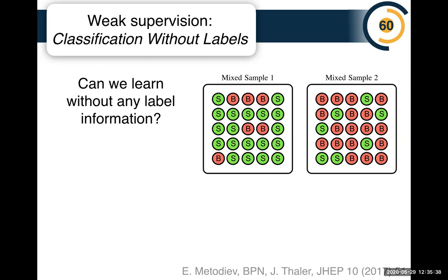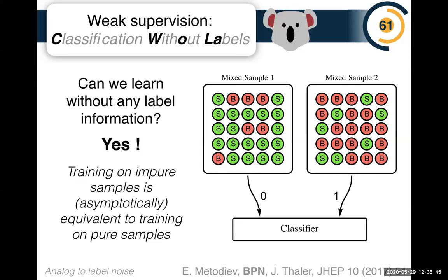One such technique is called Classification Without Labels, which we call CWoLa. The idea is simple: label everything in mixed sample one as zero and everything in mixed sample two as one, then use your favorite supervised classifier to distinguish them. Asymptotically, the classifier used to distinguish mixed sample one from mixed sample two is actually optimal for distinguishing signal from background — even though you never tell it the true signal versus background labels. You can achieve a really good classifier without the labels themselves.